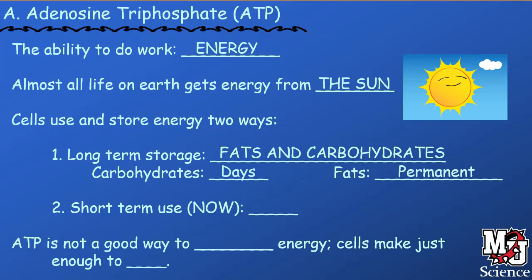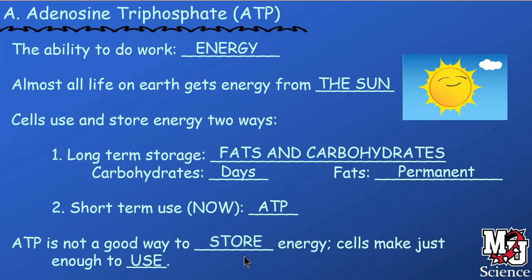For short-term use of energy — meaning energy needed right now — we can't use those carbohydrates and fats directly. We have to use adenosine triphosphate, ATP, in order to make that happen. So ATP is not a good way to store energy. Cells just make enough to use, and as ATP accumulates, the cells have to use that up.